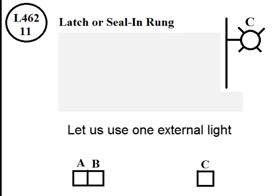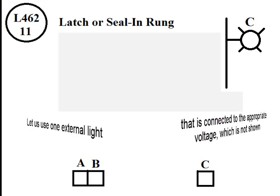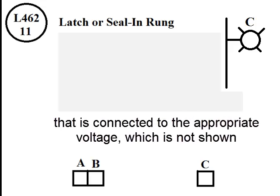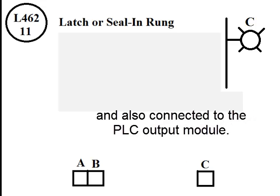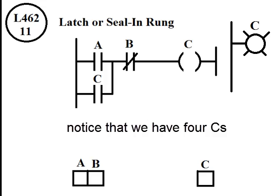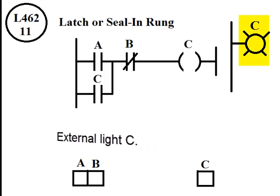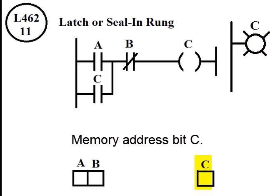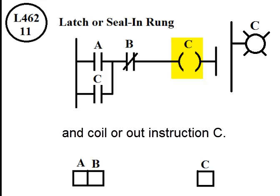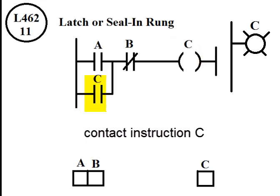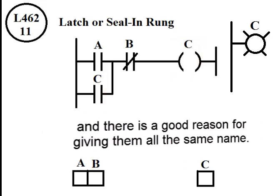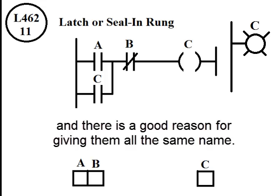Let's use one external light that is connected to the appropriate voltage which is not shown and also connected to the PLC output module. Notice we have four C's. External light C, memory C, coil C, contact C, and there's a good reason for giving them all the same name.